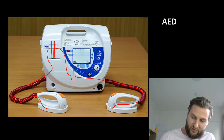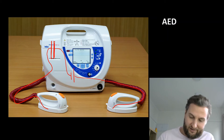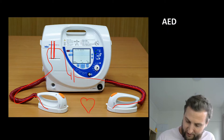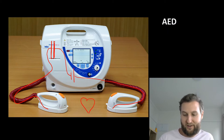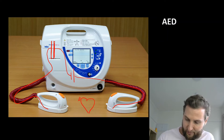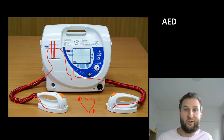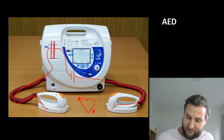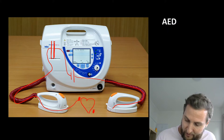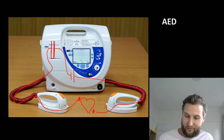Between the two paddles — you put one paddle on either side of the heart. One is supposed to go up here and one down here, with the idea being that you want that arc to go across the heart. We can connect these up in a circuit, and your heart now acts as a resistor.